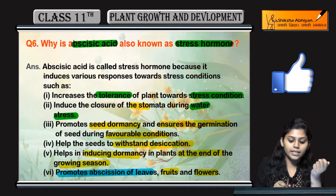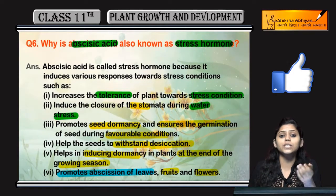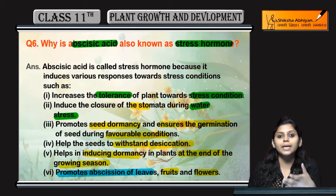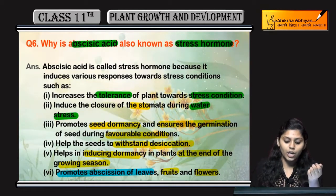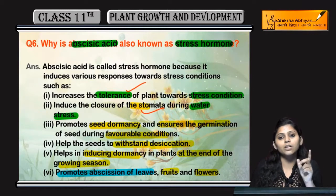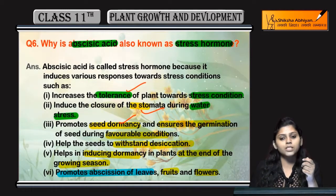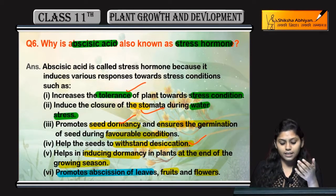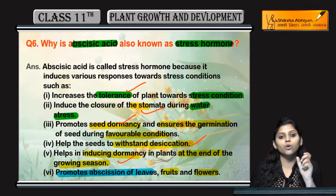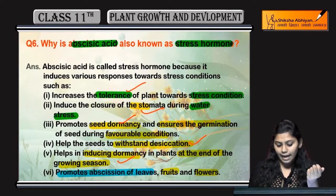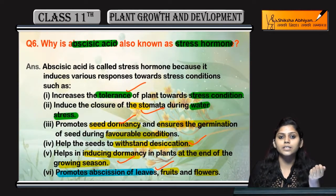So abscisic acid किस की तरह काम करता है? Stress hormone की तरह काम करता है. क्यों? Because stress condition में वो helpful होता है plants के लिए. Tolerance बढ़ाता है, stomata close करता है water stress में, seed dormancy को promote करता है, desiccation को withstand करता है, dormancy induce करता है growing season के end में, and abscission को भी promote करता है.